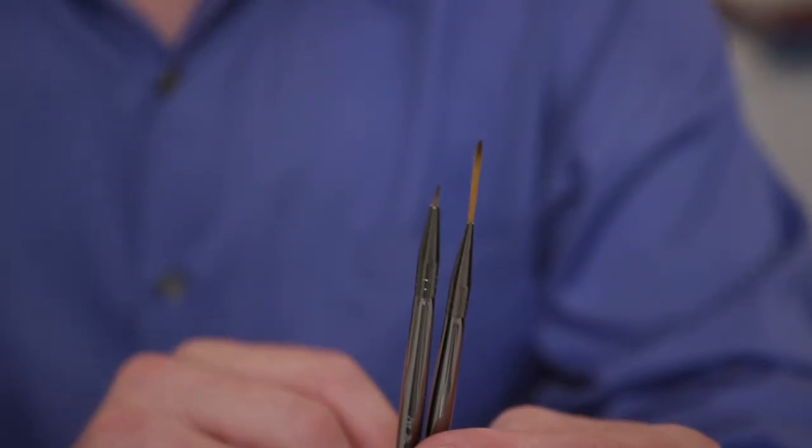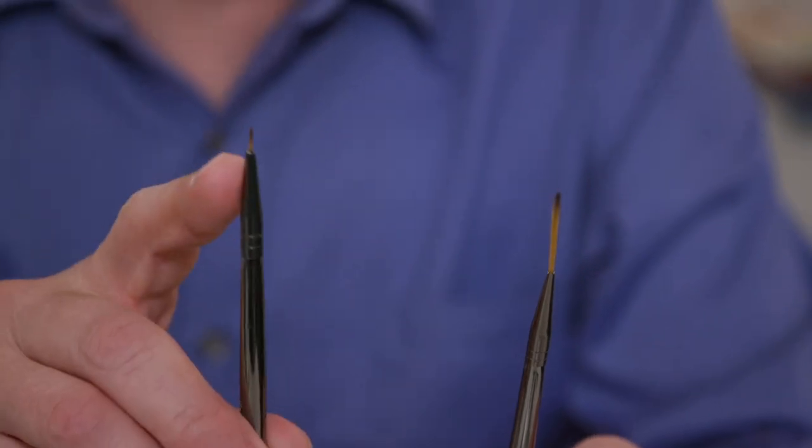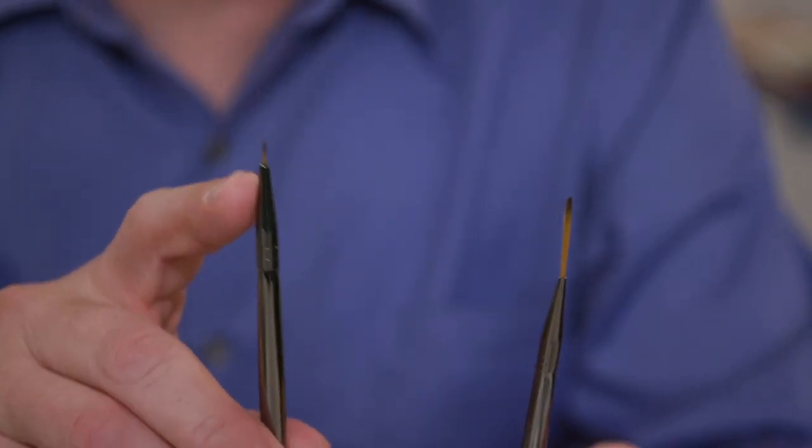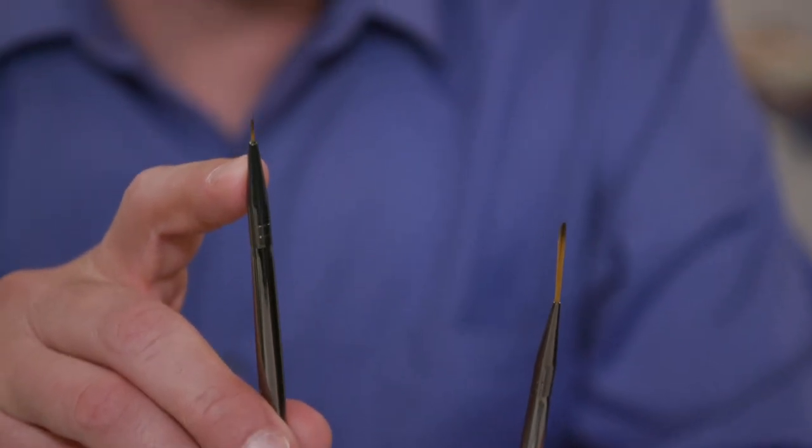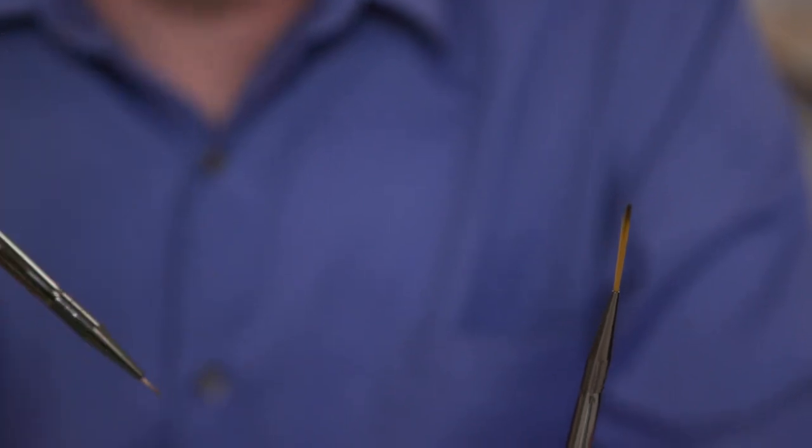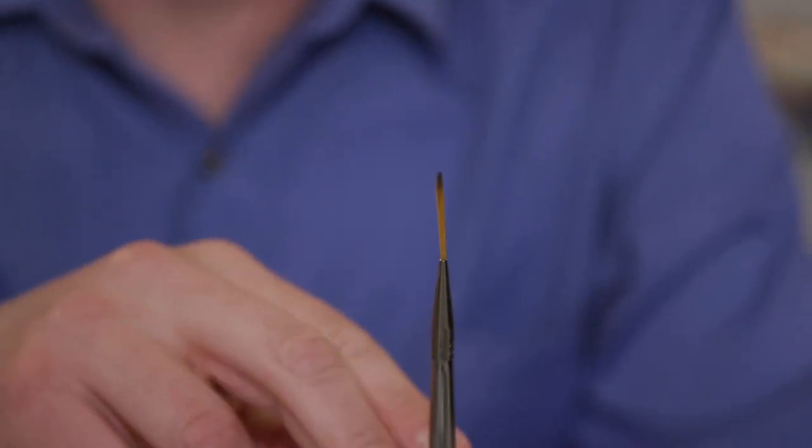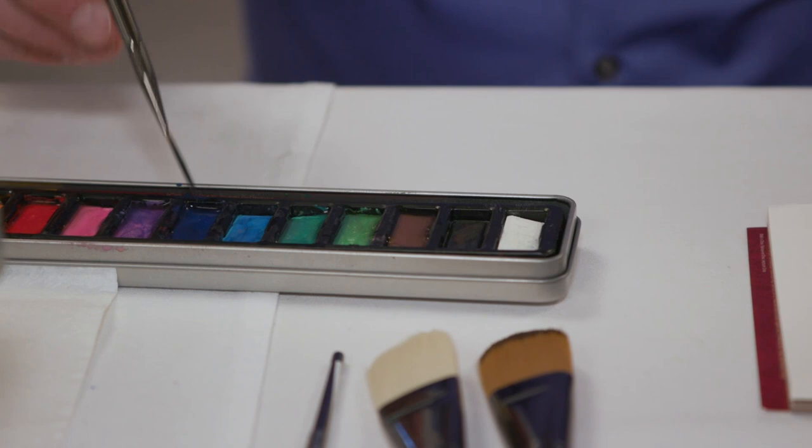The next brush I want to talk about is a liner brush. A lot of people will come into your stores and they'll gravitate when they want to do outlining and lettering to a real fine detail brush. The problem with using a brush like that is that when they want to do long lines or lettering, they end up running out of paint and they have a hard time matching up that line. So liner brushes are ideal because they have longer bristles and they hold more color. You want to make sure that you completely load that brush with color, utilize the full length of those bristles.